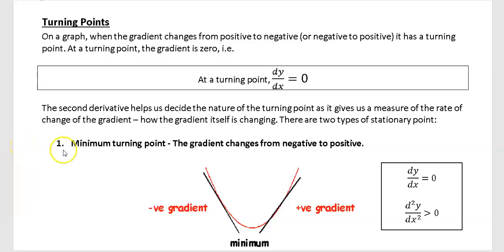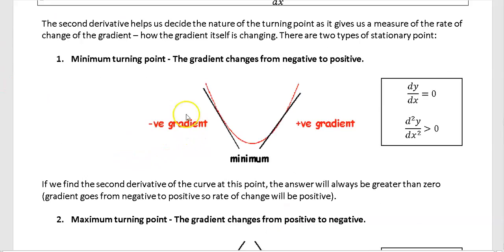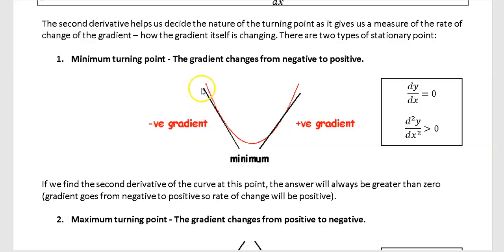In this video we're going to look at turning points, sometimes referred to as stationary points. Looking at this minimum turning point on the graph, you can see it has a bottom part which is the minimum. Just before the minimum there is a negative gradient tangent, and then after the minimum there is a positive gradient.